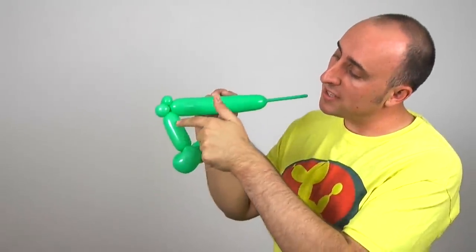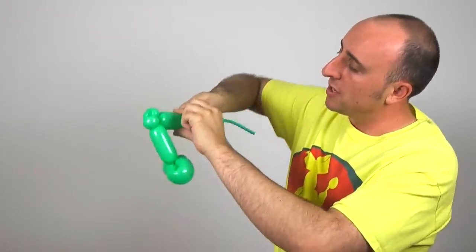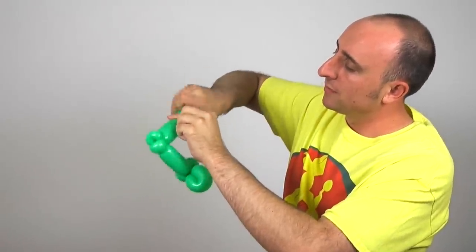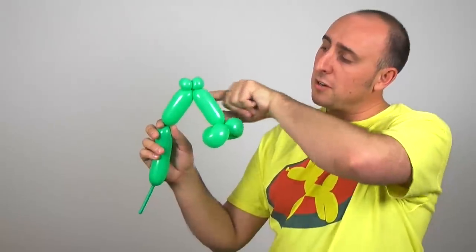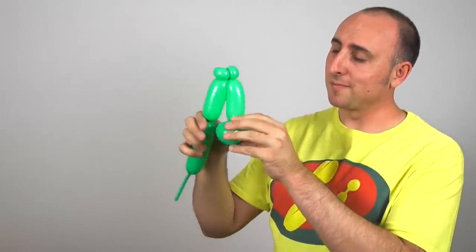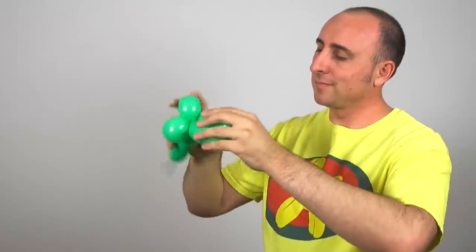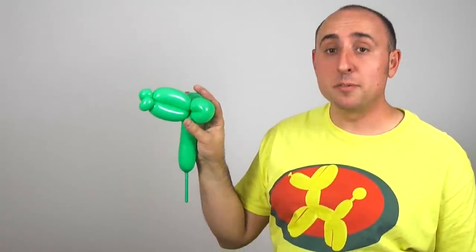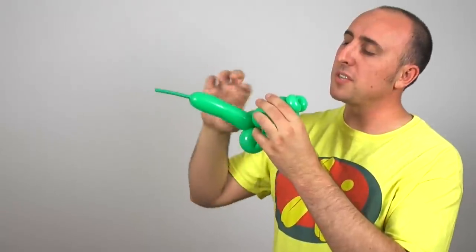Now we want to make another section this length, so about four inches. Give the balloon a squeeze. These two here should be about the same size. Now we want to twist where the tail is here to where this part is here. And we have a very simple fish, but I like to give it a little bit of extra.